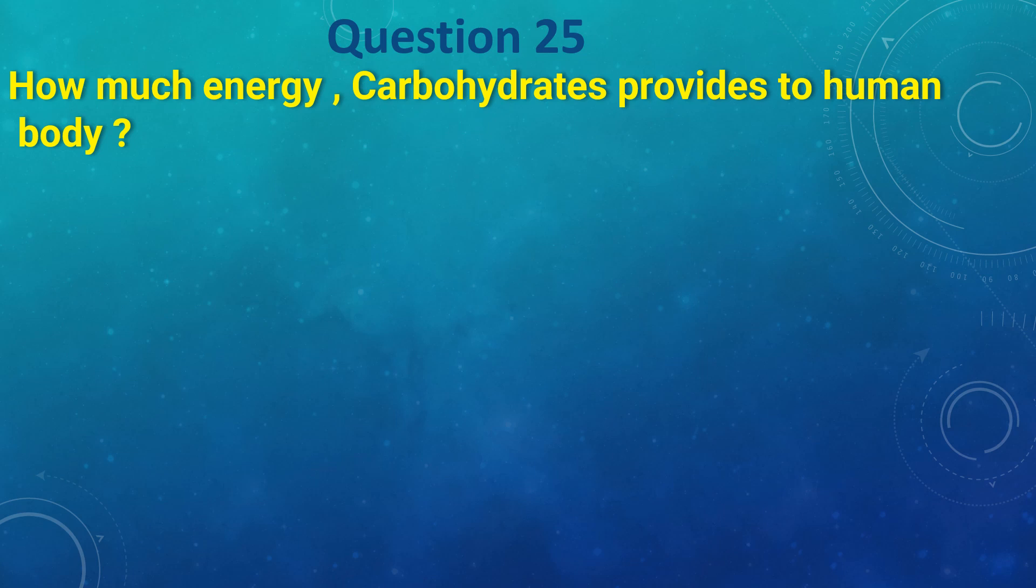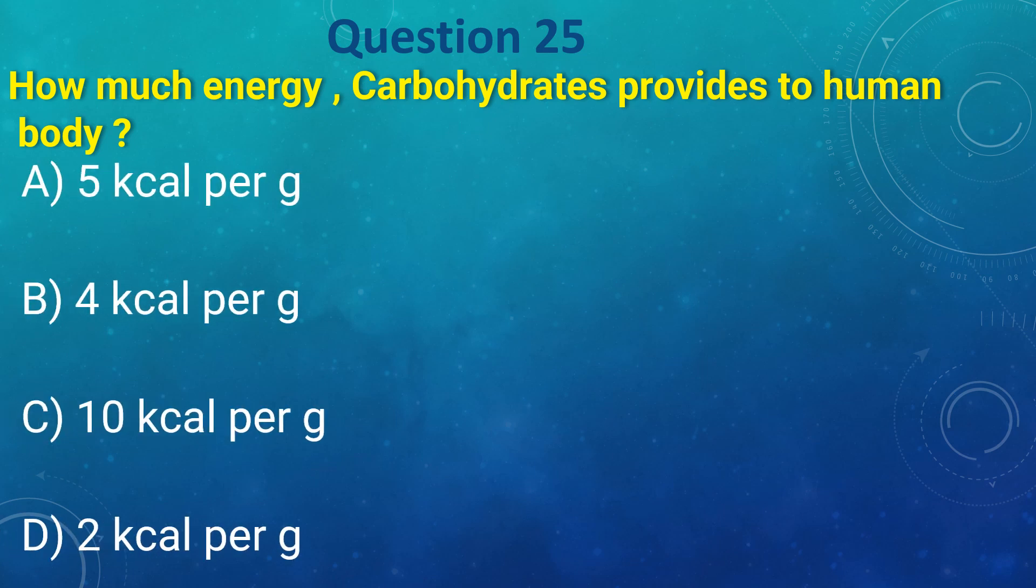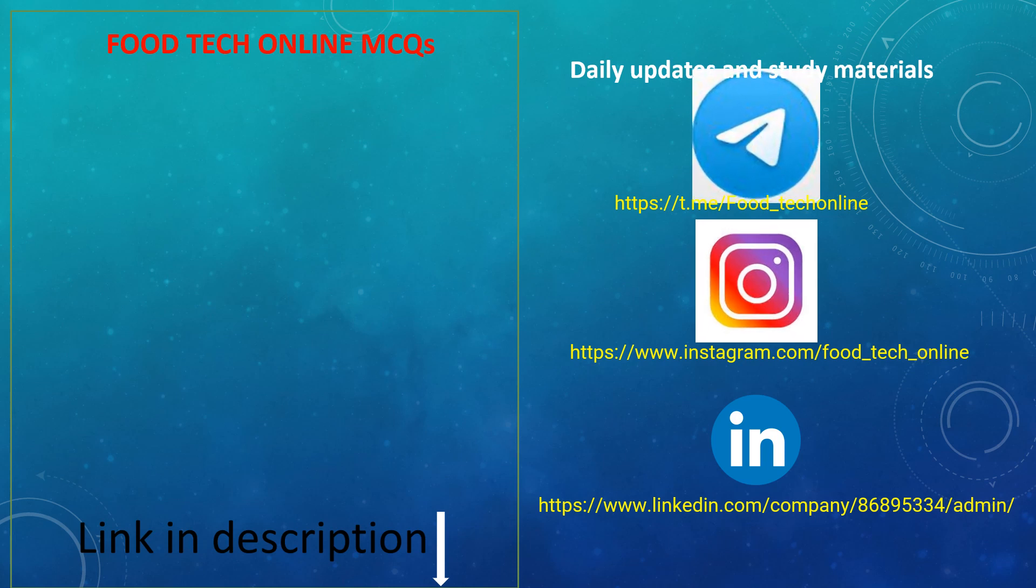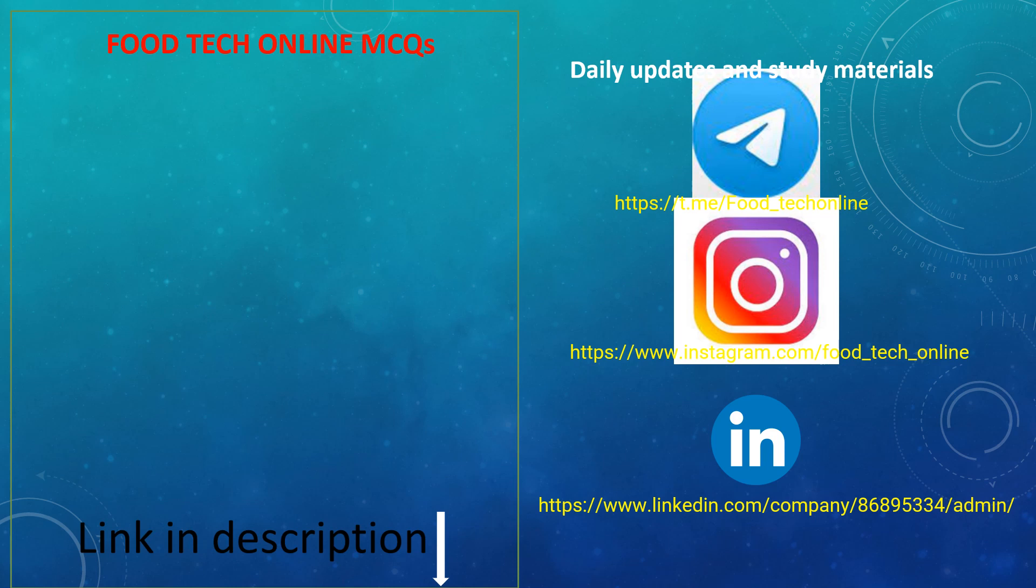How much energy do carbohydrates provide to the human body: a) 5 kilocalories per gram, b) 4 kilocalories per gram, c) 10 kilocalories per gram, d) 2 kilocalories per gram. The answer is b) 4 kilocalories per gram. For more videos, link in description. For daily updates and study material, visit our Telegram, Instagram, and LinkedIn pages. So subscribe to our channel, share with your friends. Thank you.